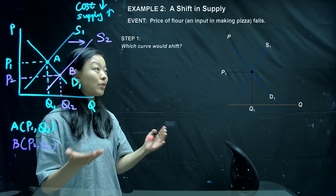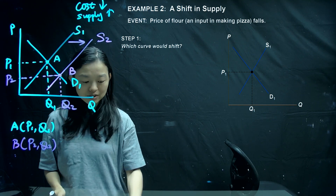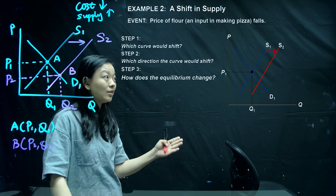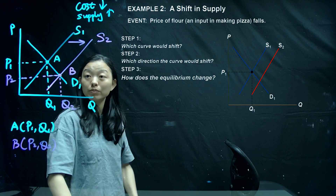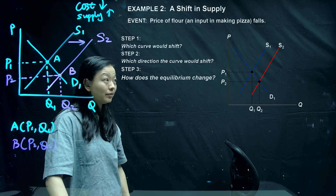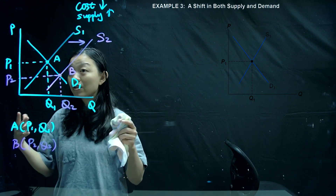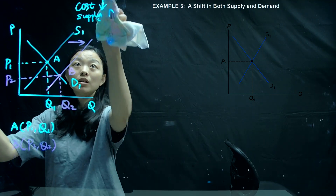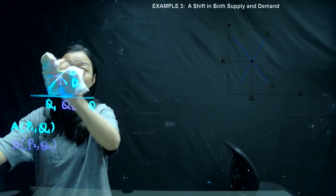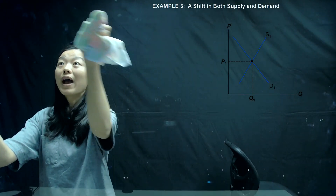Three-step analysis: cost decreases, supply will increase, so the supply curve will definitely shift — to the right-hand side — resulting in the new equilibrium price and new equilibrium quantity. For example three, we're talking about supply and demand shifting at the same time, which will be a little tricky.